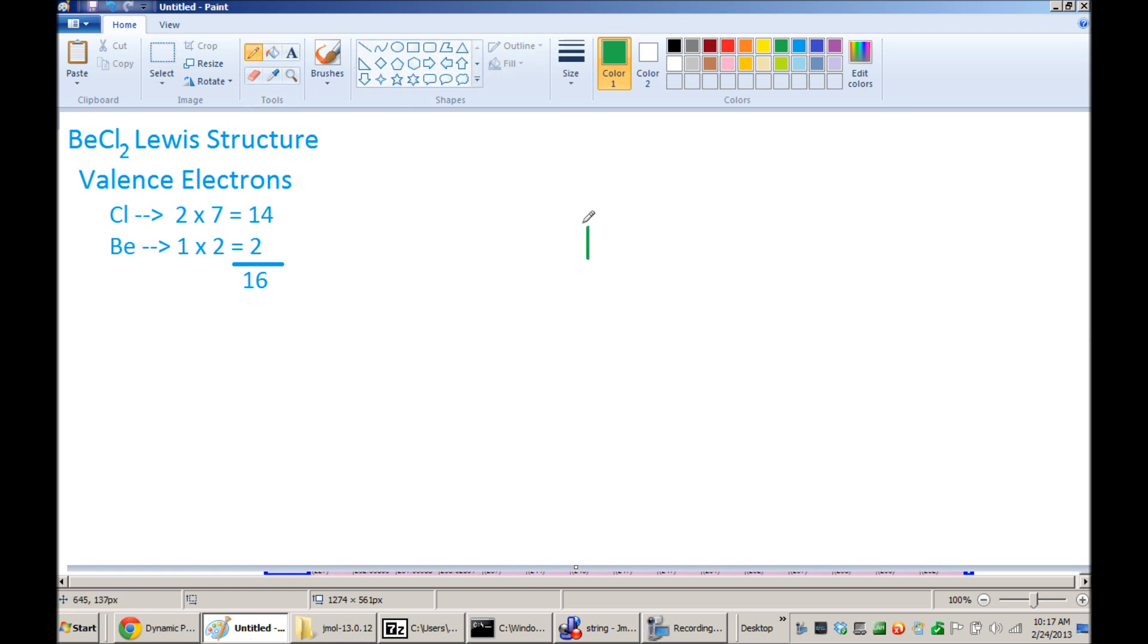So I can start drawing the Lewis structure by just drawing beryllium with two valence electrons and two chlorines, each with seven valence electrons.